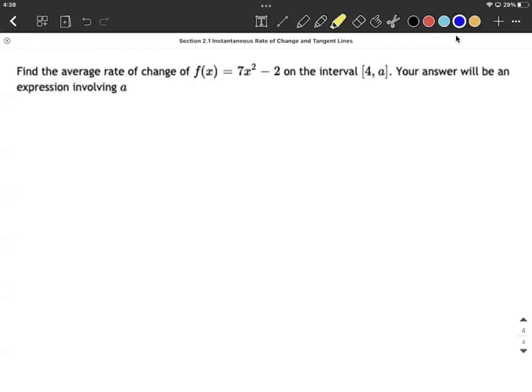Okay, our goal on this is to find the average rate of change when we're given a function on a given interval. Now this interval is from 4 to A. So remember, these are both x values. That A is not a y value. Both of those are x values in this interval.